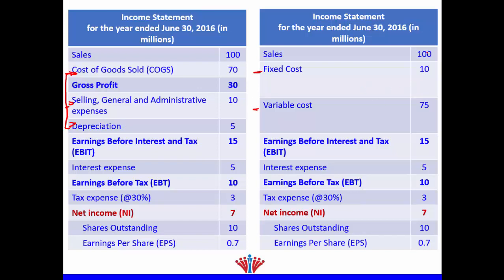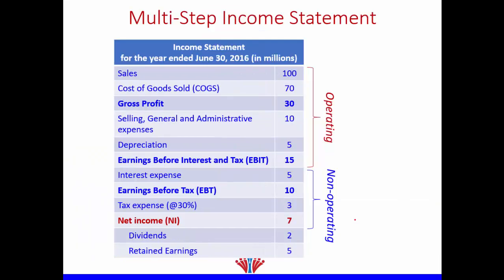We can write it as 100 minus fixed cost of 10 minus variable cost of 75, which gives us EBIT of 15 — the same result. The rest of the financial statement remains as is. When we look at the income statement from sales down to EBIT, this refers to our operations, and that's why we call it the operating part.